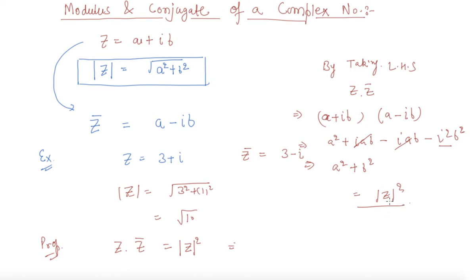Which is mod z square. So hence true, students, that this property holds true: z z bar equals mod z square. Let us discuss some more properties on mod and conjugate.